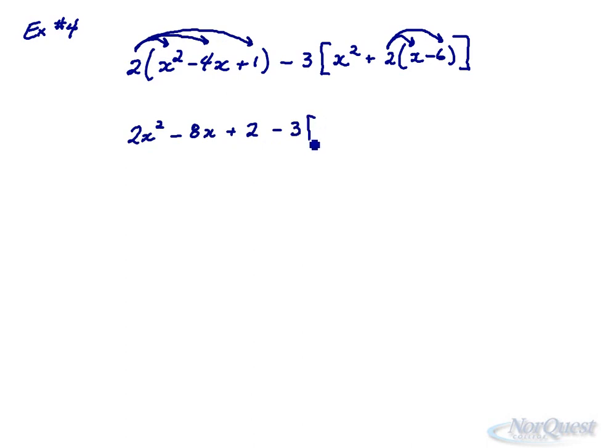So I end up here with 2x² - 8x + 2 subtract 3. I'm going to keep the big set of brackets and work on the inner ones. It'll be x² + 2x - 12. Close the bracket and now distribute one more time. And then we can collect like terms. So we're left with 2x² - 8x + 2 - 3x² - 6x + 36.